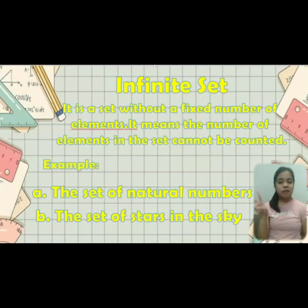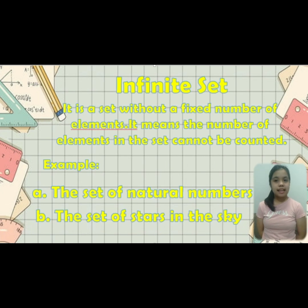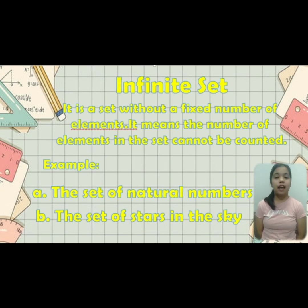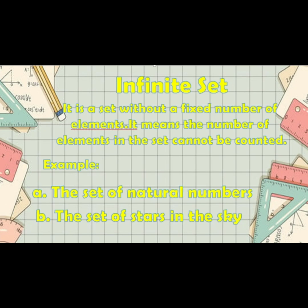The second type of set is the infinite set. It is a set without a fixed number of elements, meaning the number of elements in the set cannot be counted. For example, the set of natural numbers. Another example is the set of stars in the sky.